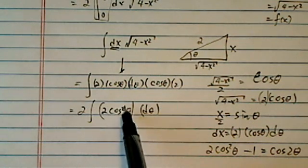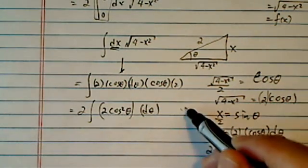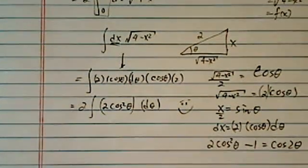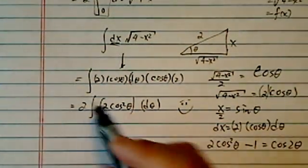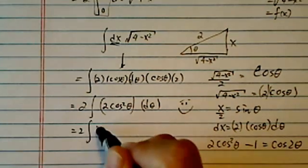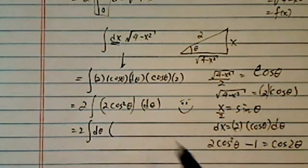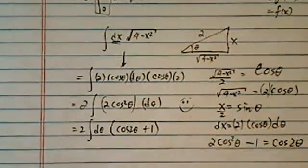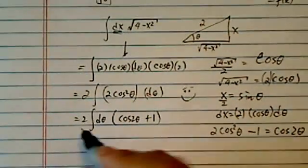This is why when we see the cosine theta squared, we should have a big smile, because from there onward you know you can actually have a closed form. So now I have twice. Let's put a d theta here. This becomes cosine of 2 theta plus 1. I'm almost there. I can have a closed form now.